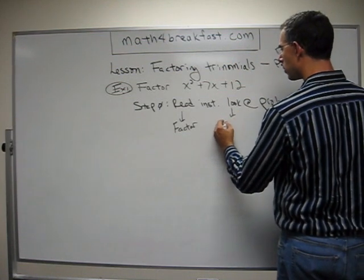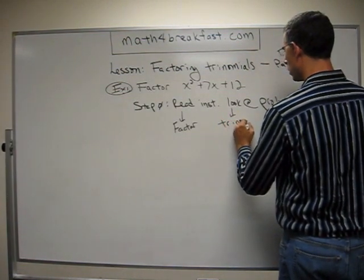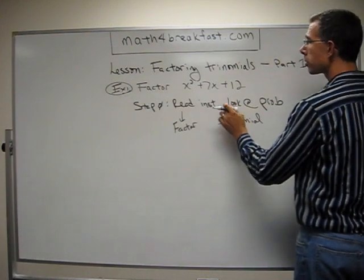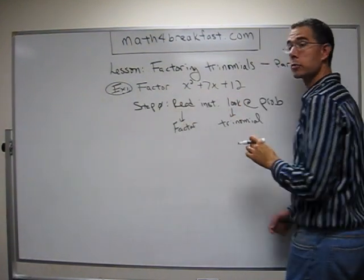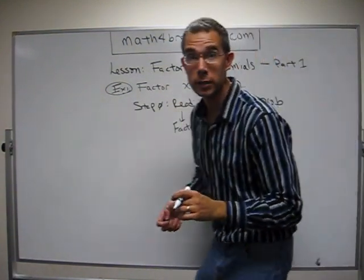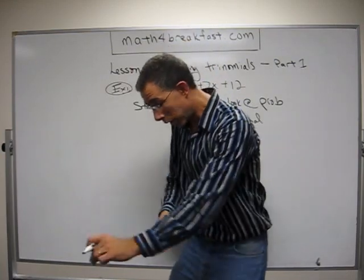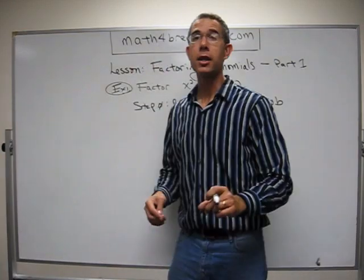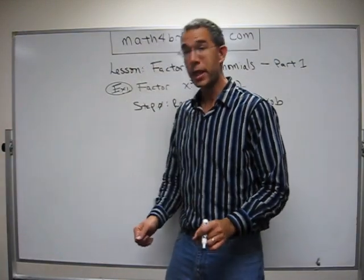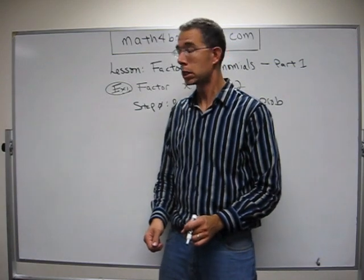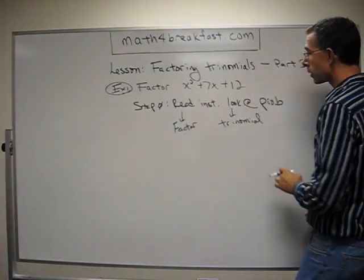And when I look at the problem, I see trinomial. I see I have a trinomial because I have 1, 2, 3 terms all added or subtracted together. That makes it a trinomial — like 1, 2, 3 wheels on a vehicle makes it a tricycle. So, trinomial: 1, 2, 3.